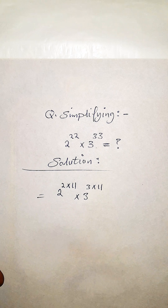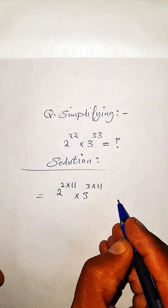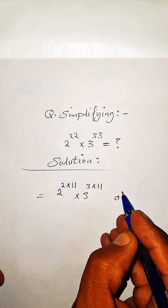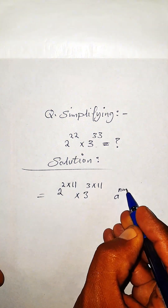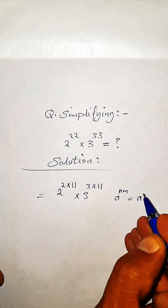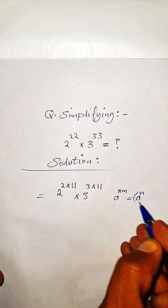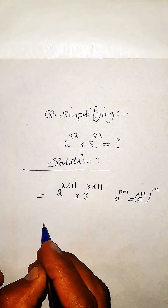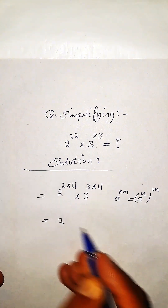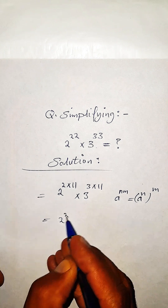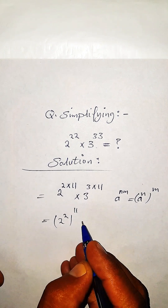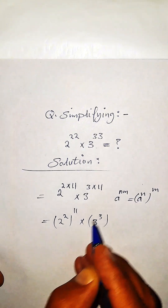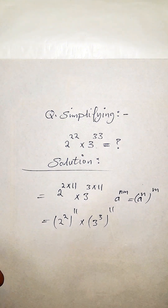This is in the form of a to the power of nm, which equals a to the power of m, whole to the power of m. And this becomes: 2 to the power of 2, whole to the power of 11, times 3 to the power of 3, whole to the power of 11.